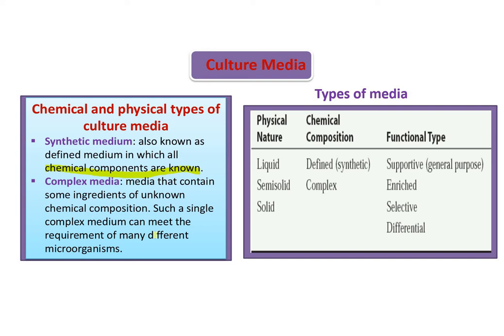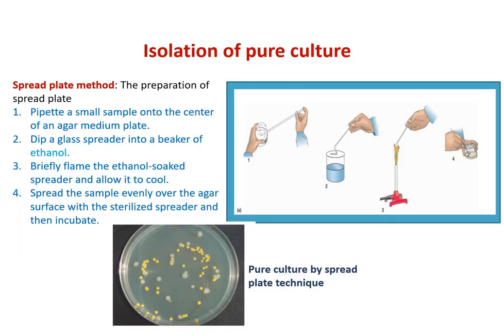Based on functional type, culture media can be supportive, enriched, selective, or differential. Supportive media is used for general-purpose growth of microorganisms. Enriched media contains extra nitrogen sources like peptone and yeast extract to support different types of microorganisms. Selective media is used when growth of individual microorganisms is of interest, and differential media is used for differentiation of different kinds of microorganisms.